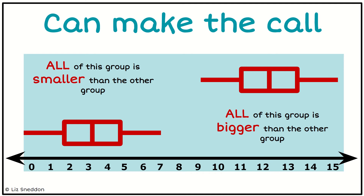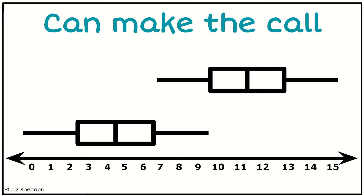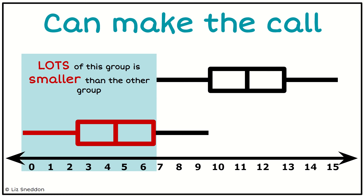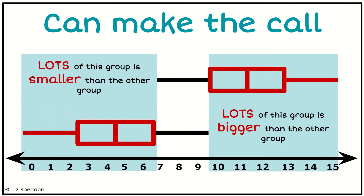Let's look at another scenario — what if they're a little bit closer together? In this case, lots of this group's data is smaller than the other group. Equally there's lots of the data on the other group that is bigger, so there's a little bit of data that overlaps, but generally speaking lots of one group is bigger than lots of the other group. So that's a situation where I could reasonably confidently say this group tends to be bigger than that group.